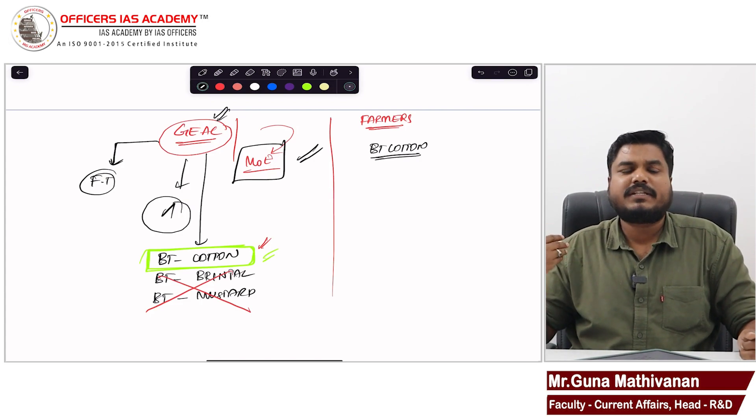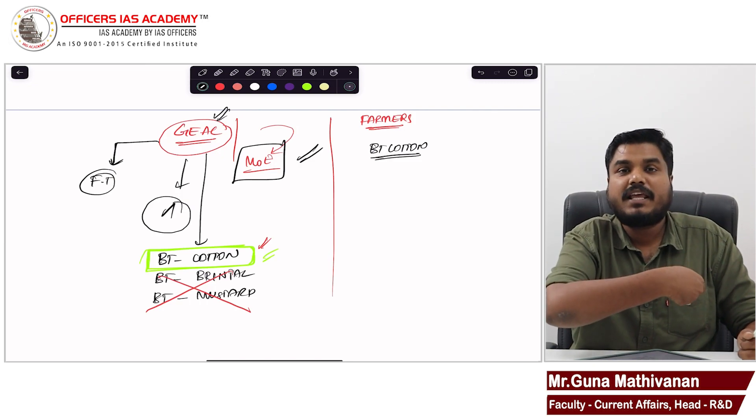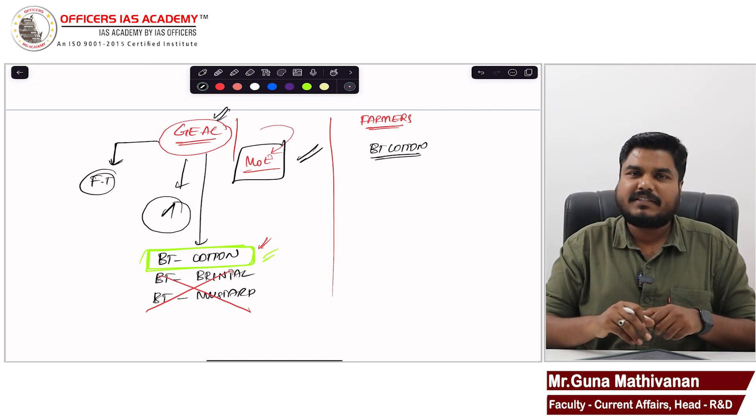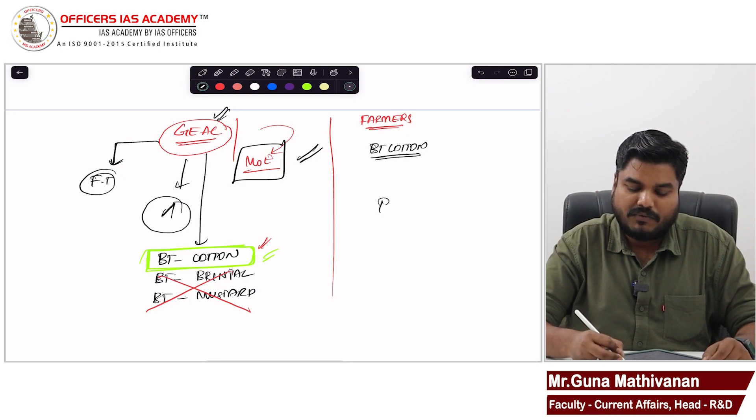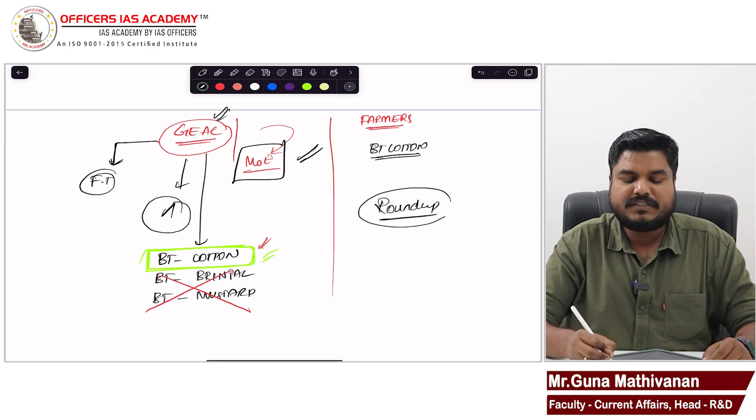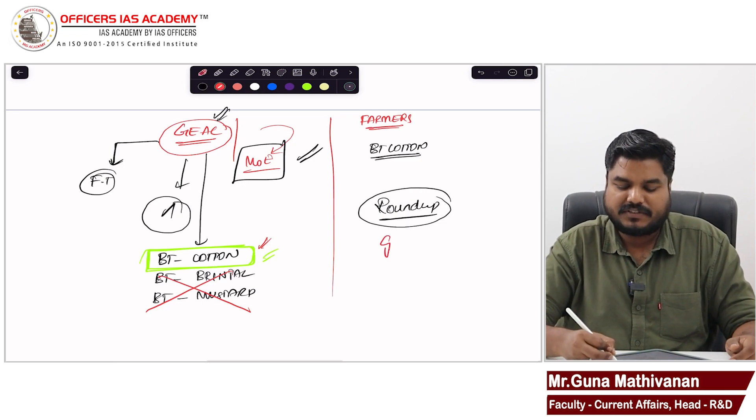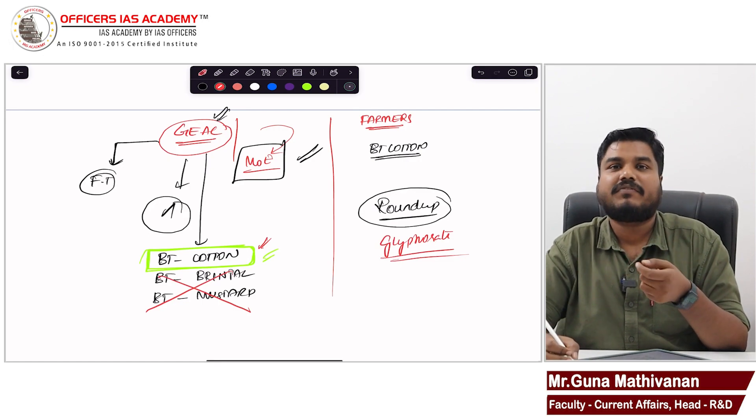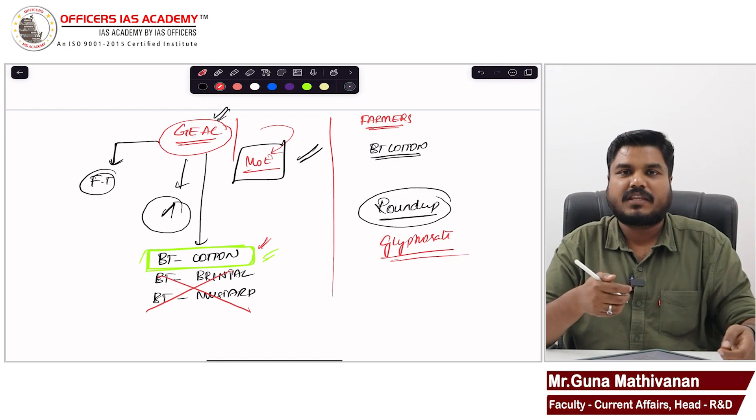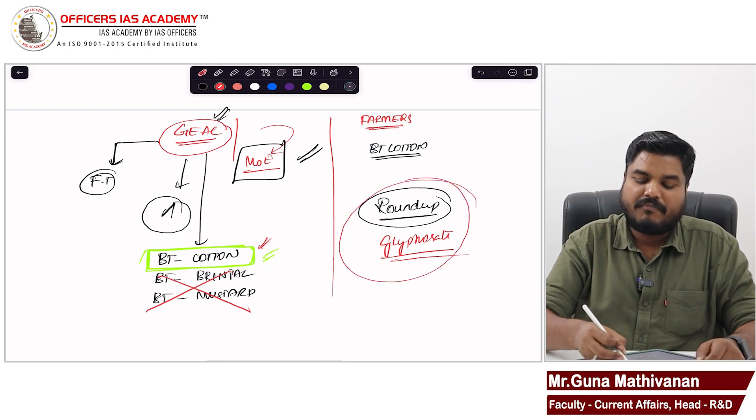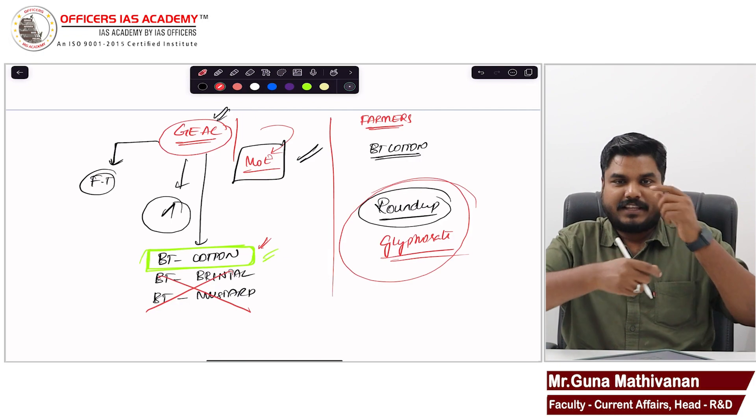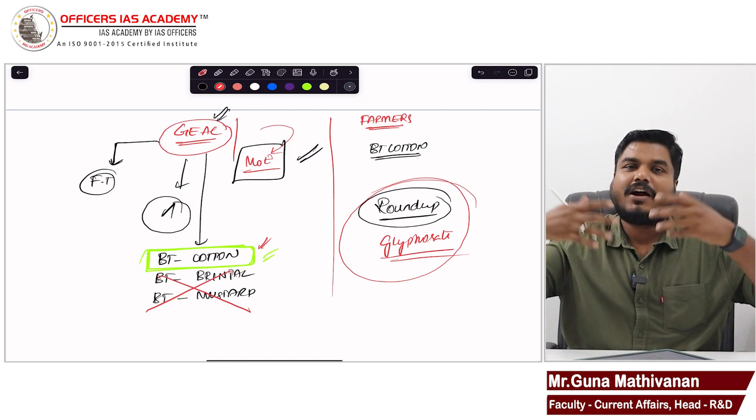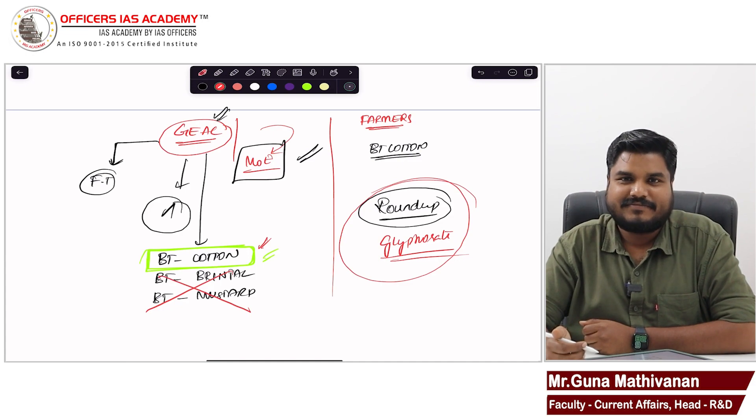What we can do? Farmers can individually pluck those unwanted plants. Time consuming, labor intensive. So what farmers do is they will spray herbicide to kill the weeds. One common herbicide which farmers spray is called Roundup. Roundup is the brand name. The actual chemical name is Glyphosate.